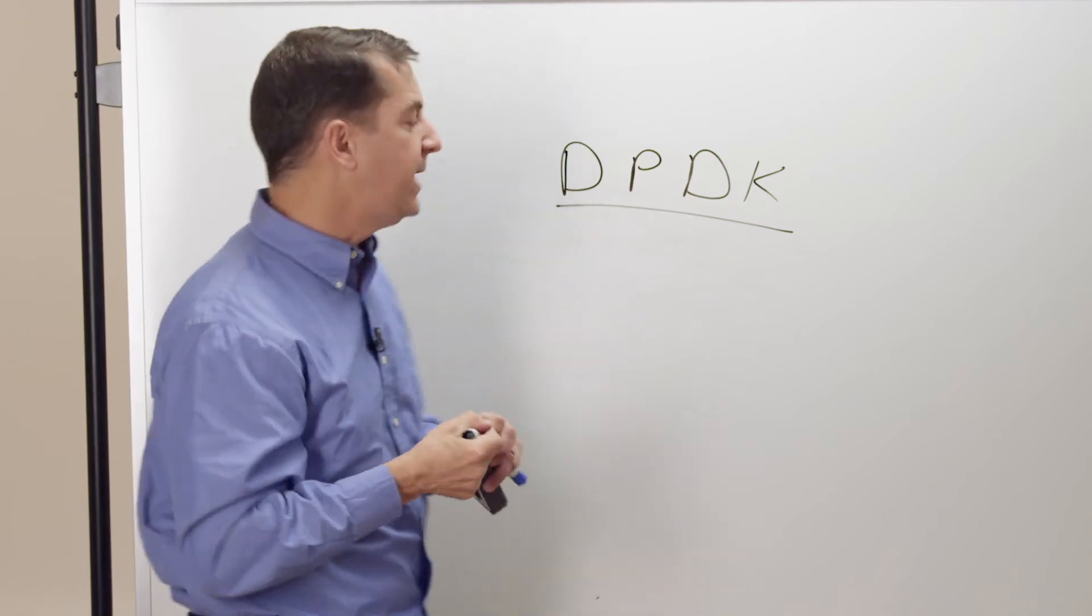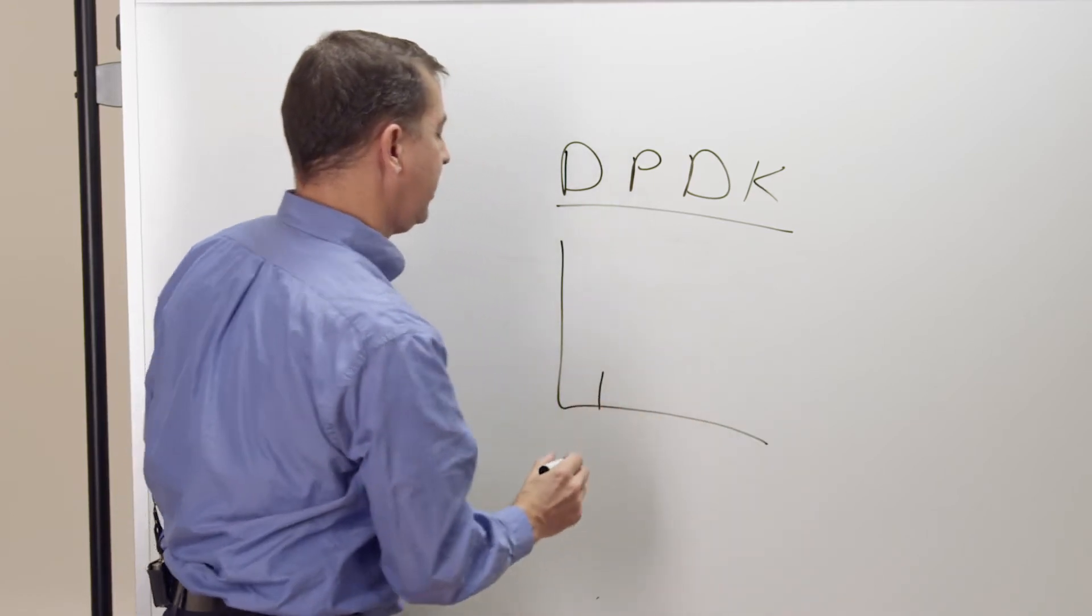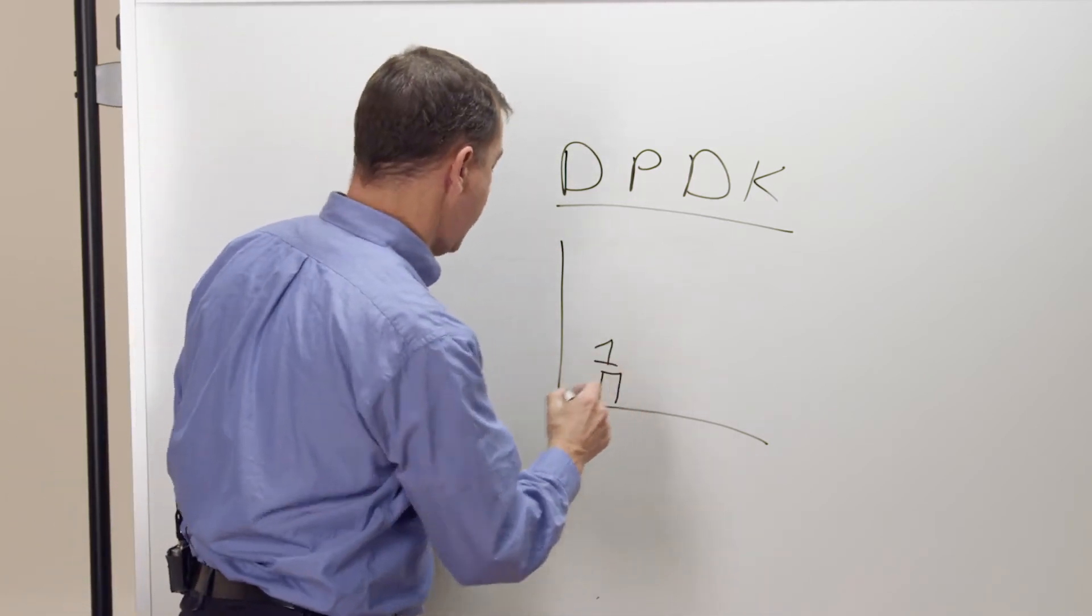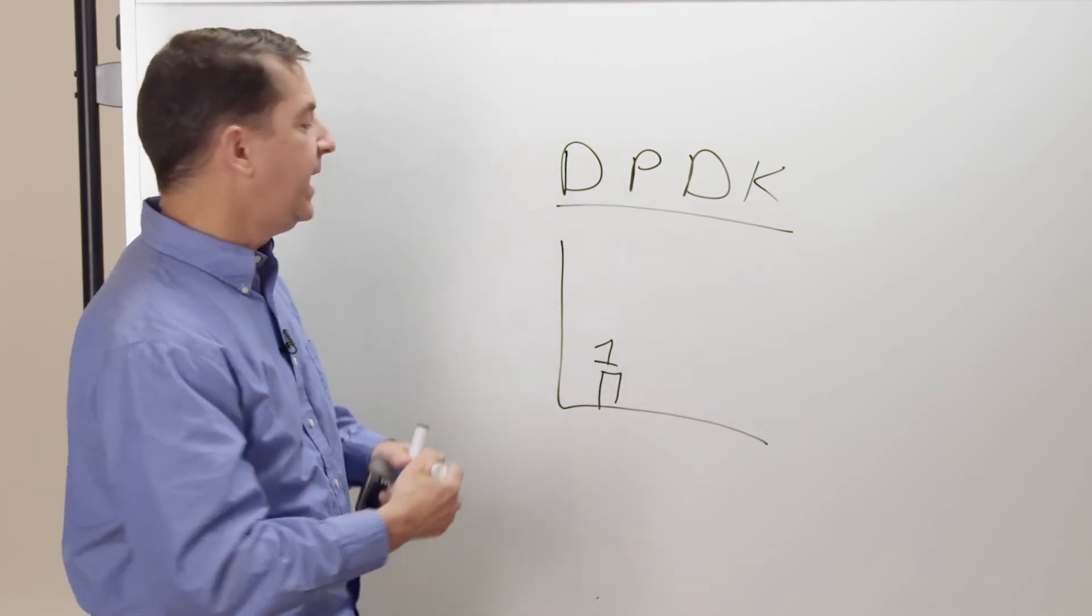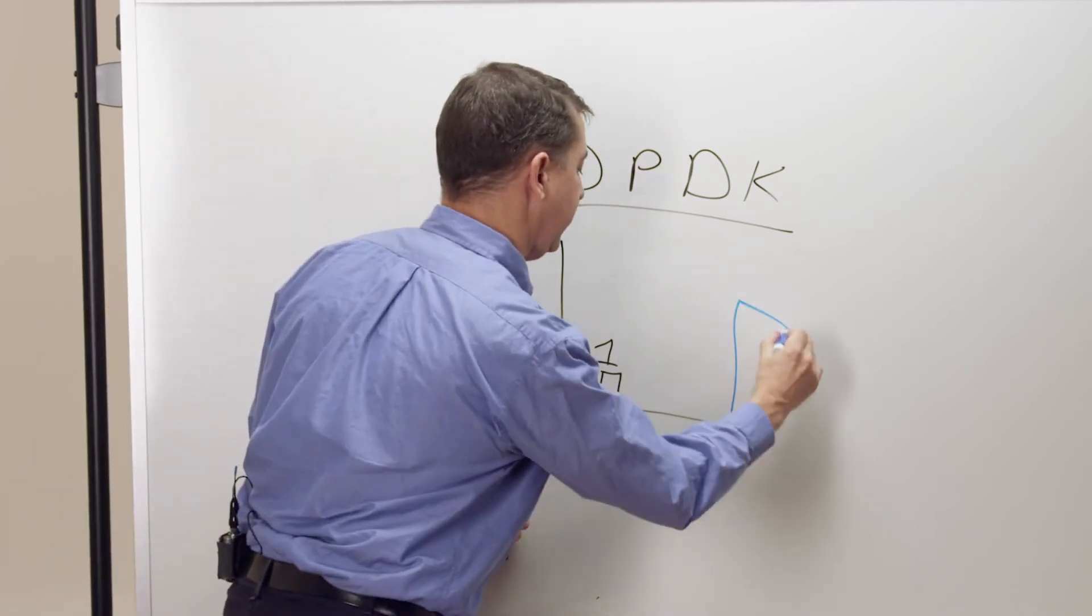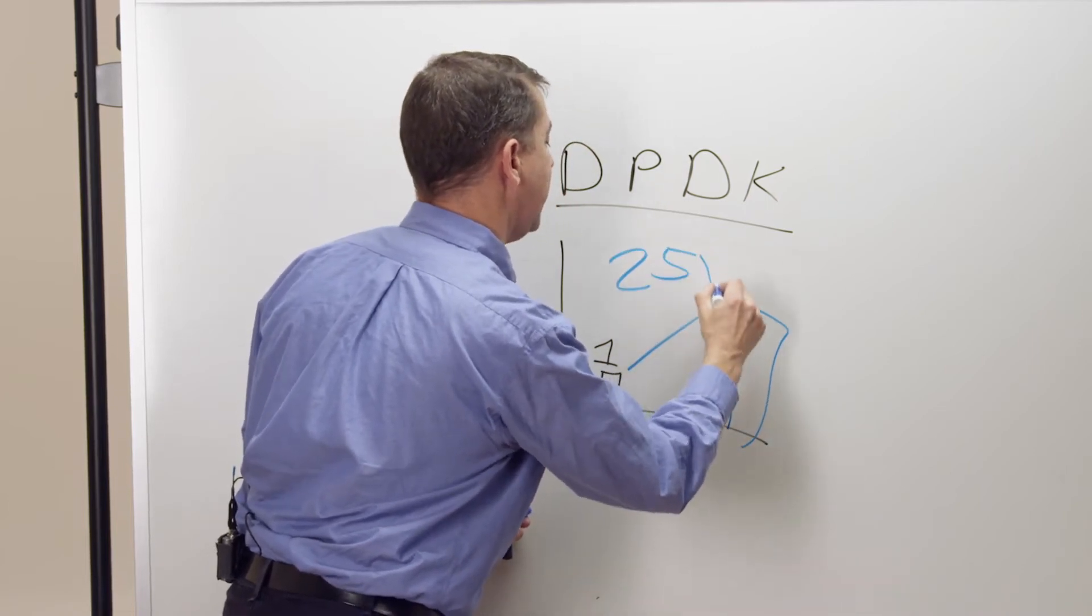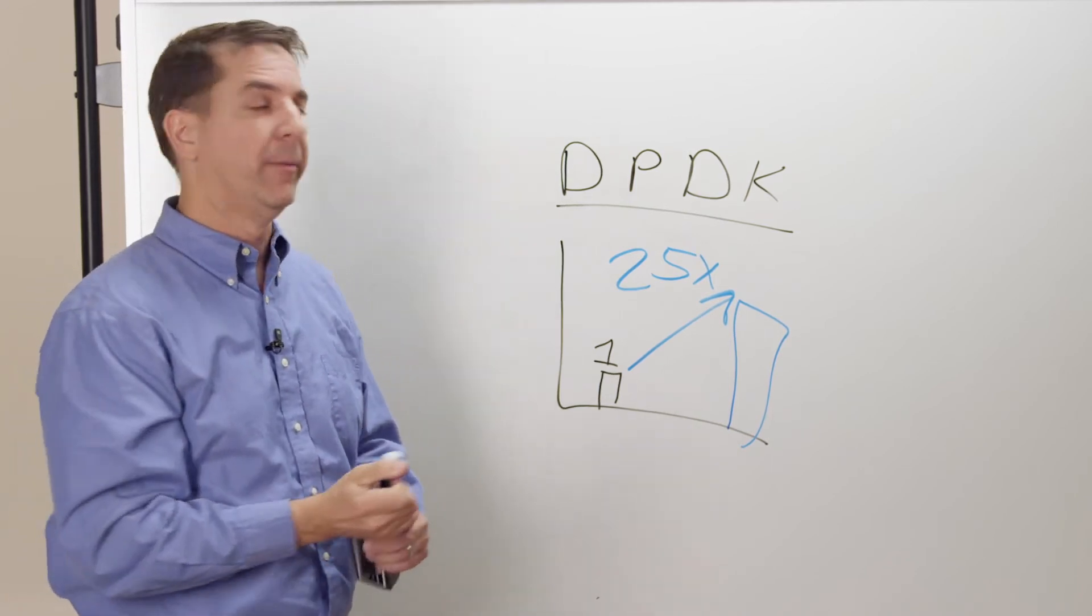So let me share with you some data on what that performance number looks like. If you were to look at a baseline in a standard Linux networking stack, and let's call that the baseline of one, and then go and compare that to what you'll get by running it on top of the Data Plane Development Kit, you'll get approximately a 25x multiplier in performance.